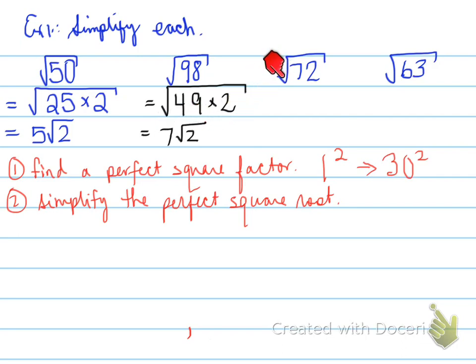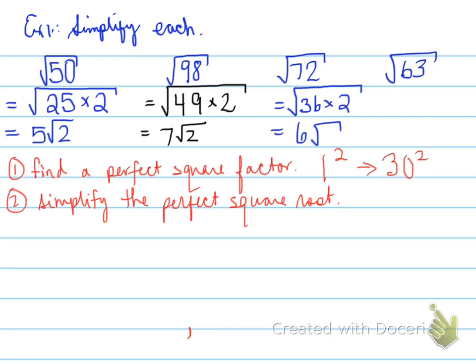For root 72: some might think 9 is the factor to use, but 9 is not the best choice. The largest perfect square that goes into 72 is 36. So root 72 breaks up as 36 times 2; the square root of 36 is 6, giving 6 root 2. Finally, root 63 can be broken into 9 times 7; the square root of 9 is 3, leaving root 7 underneath, giving 3 root 7.